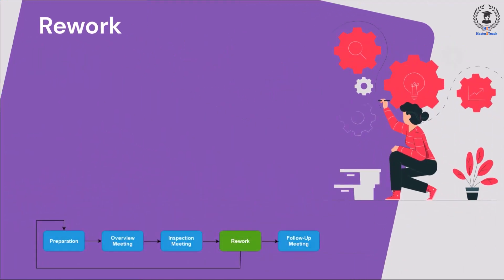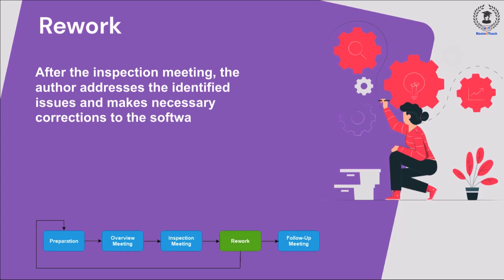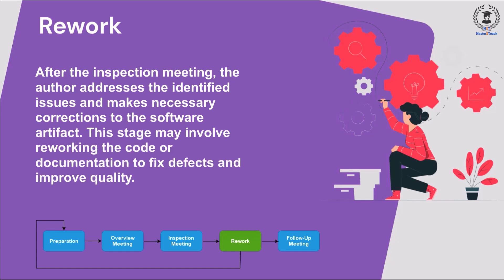Rework. After the inspection meeting, the author addresses the identified issues and makes necessary corrections to the software artifact. This stage may involve reworking the code or documentation to fix defects and improve quality.